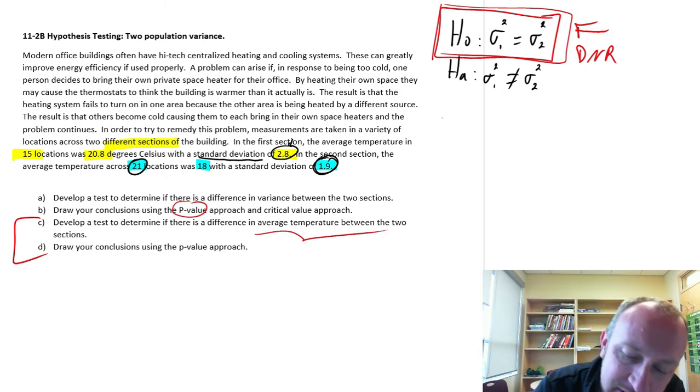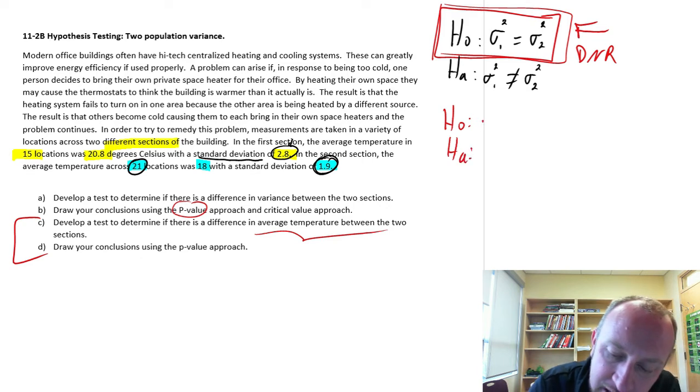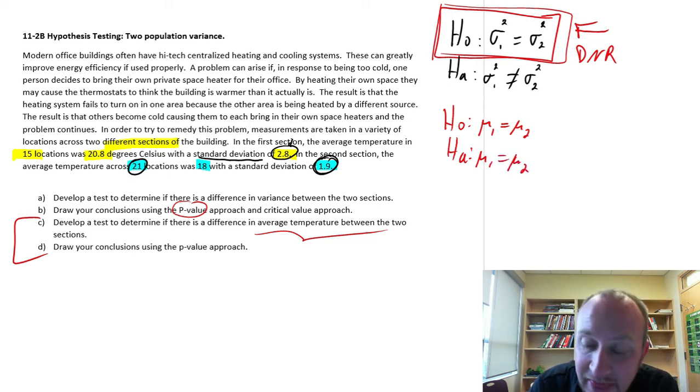In order to do that we'll set up another set of hypotheses and I'm going to set this up just, we're testing a difference, we don't have any assumption one's greater than the other, so this is again just a two-tailed test. It's a two-tailed test on means now so my notation reflects that.